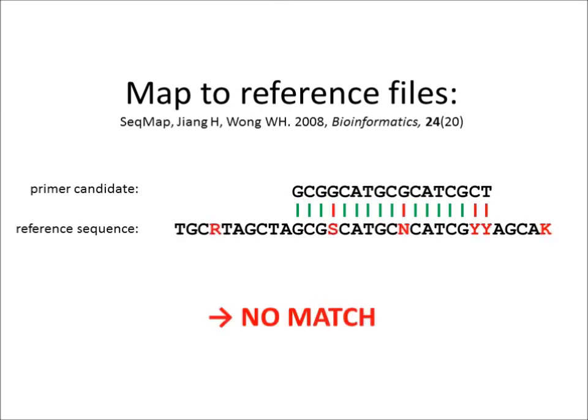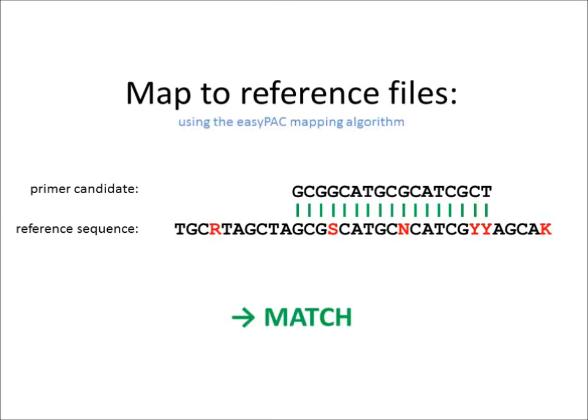There is only one limitation of the segmap algorithm to keep in mind: it will not map to degenerate reference sequences. So if you have a reference file that contains one or more degenerate sequences like consensus sequences, you might consider using the internal EasyPack algorithm, which can map primer sequences to consensus sequences but works considerably slower.